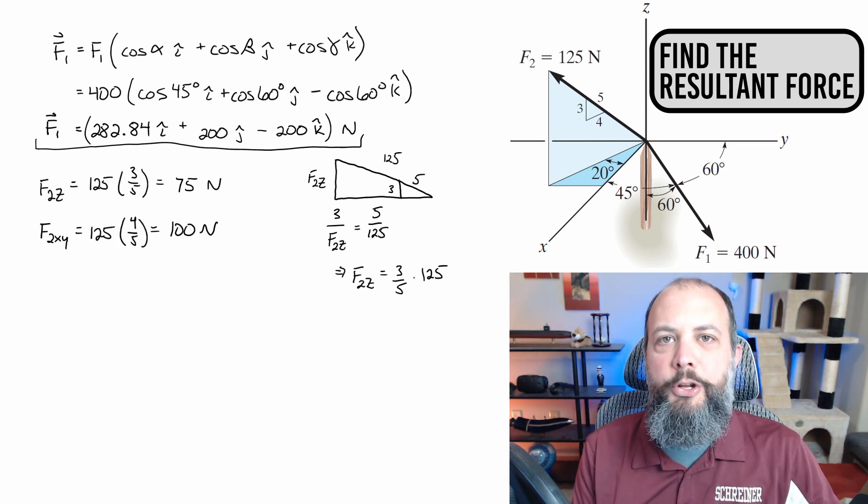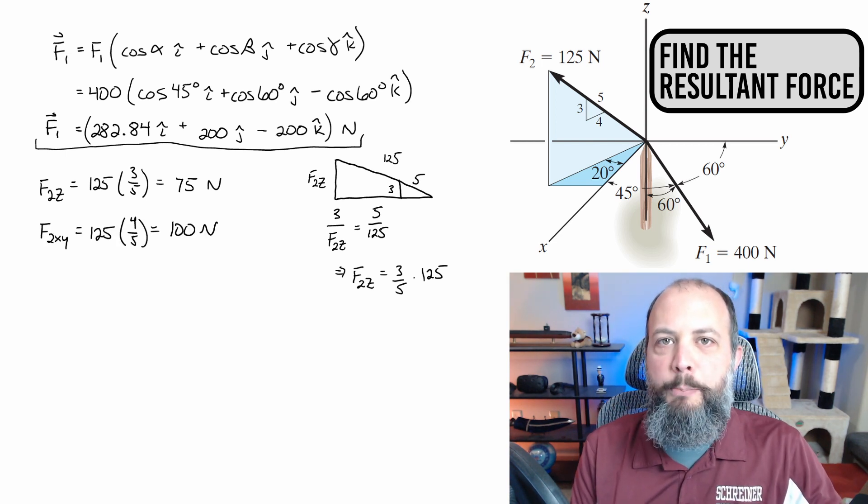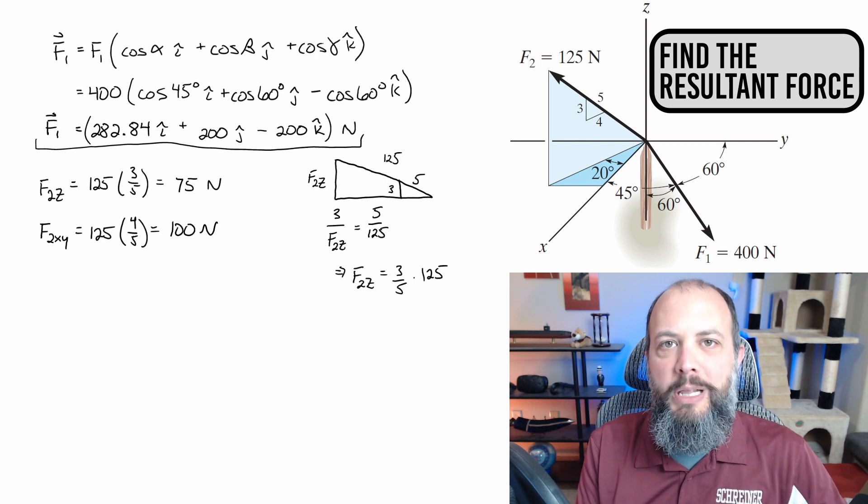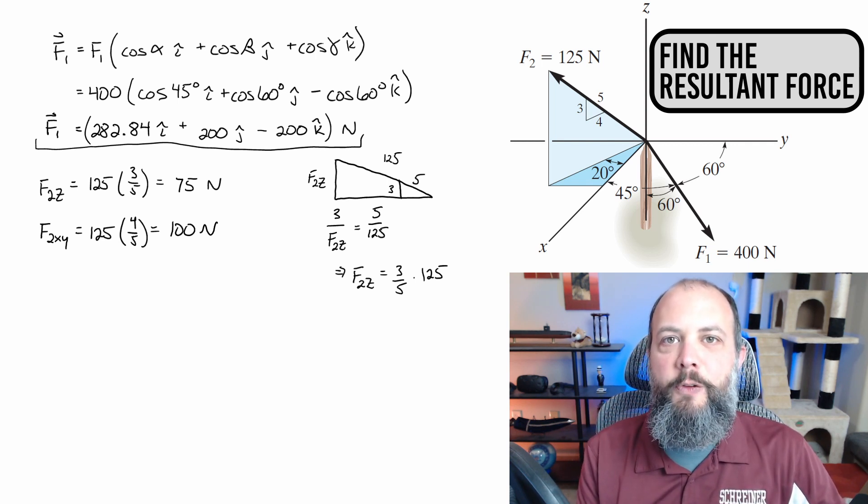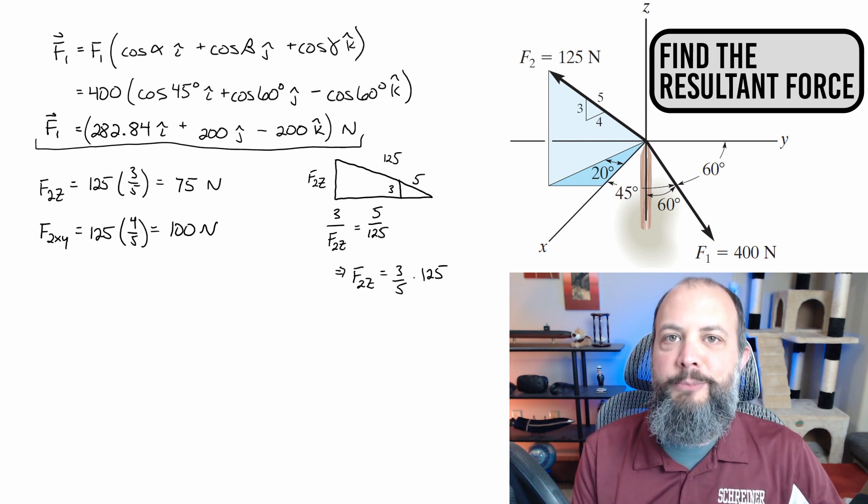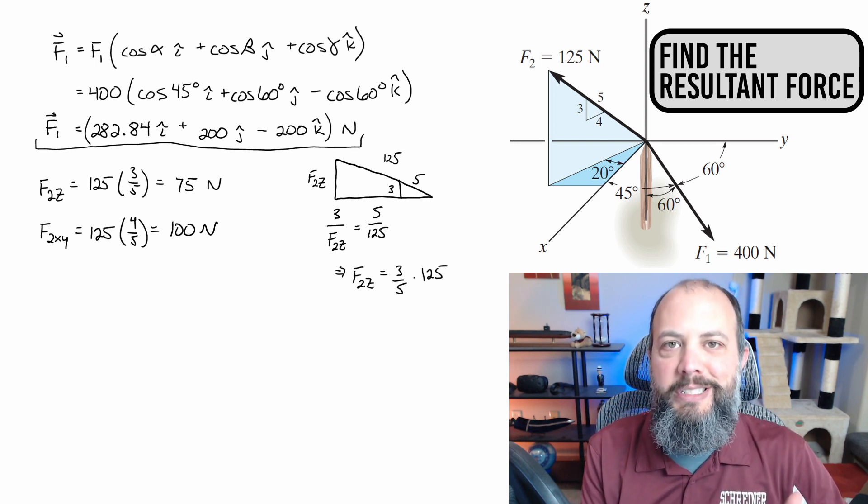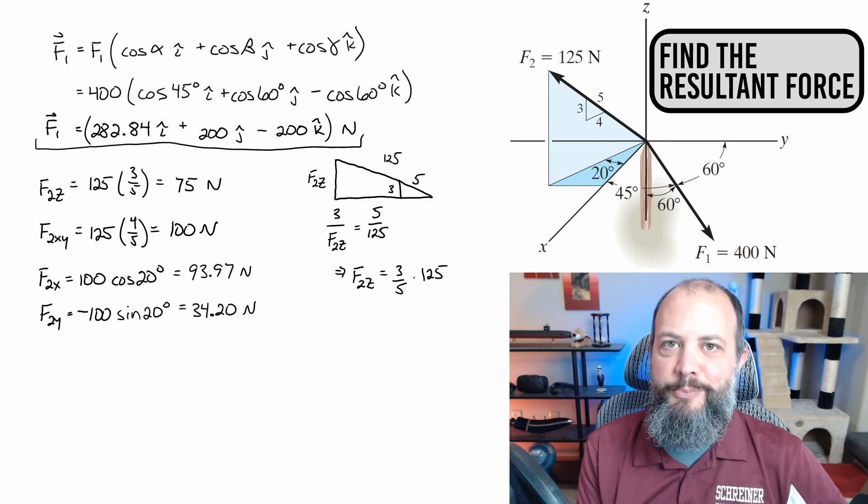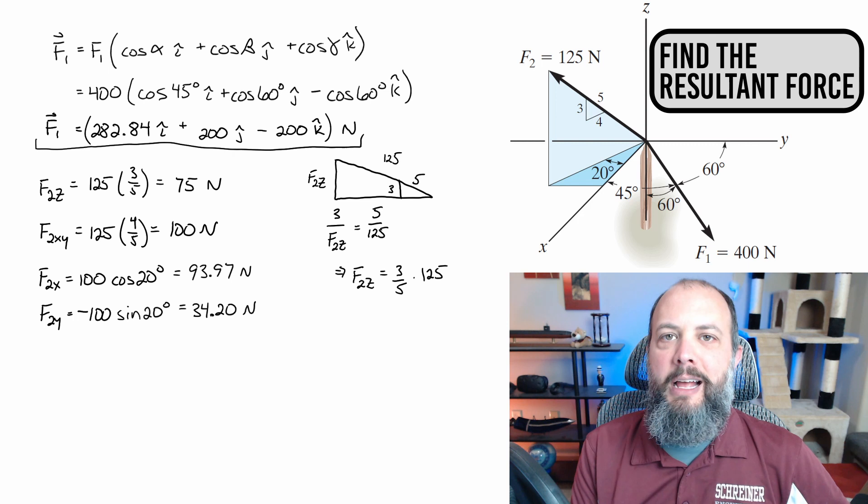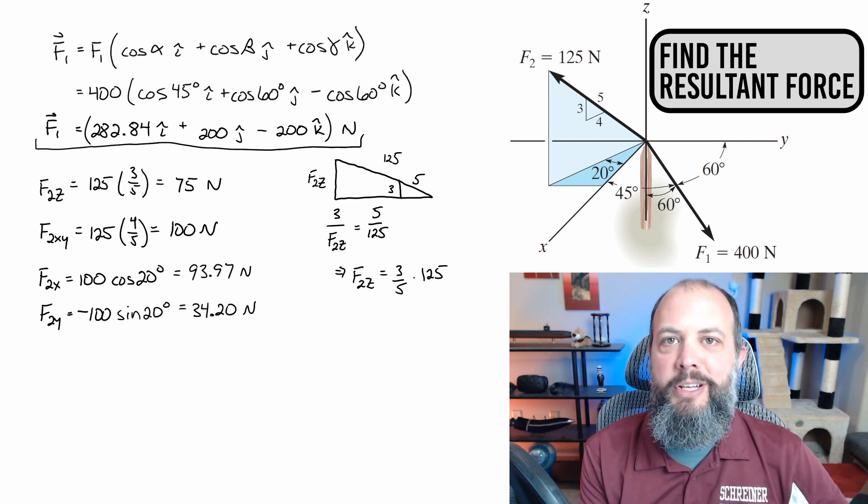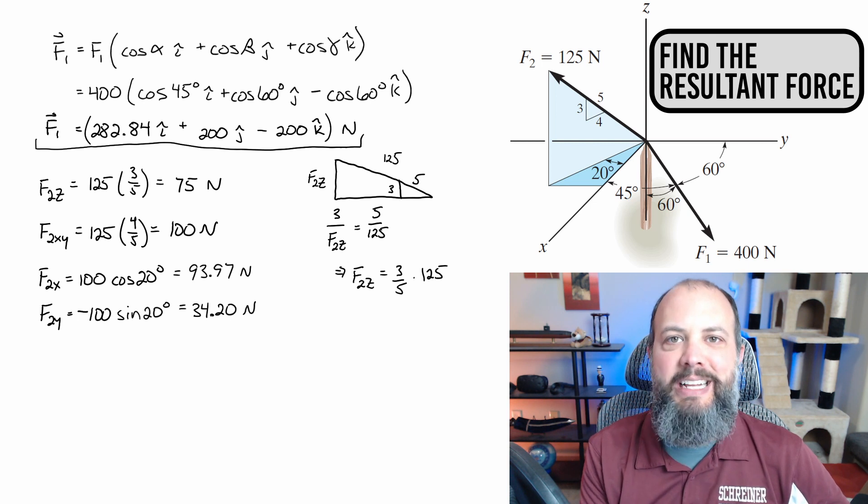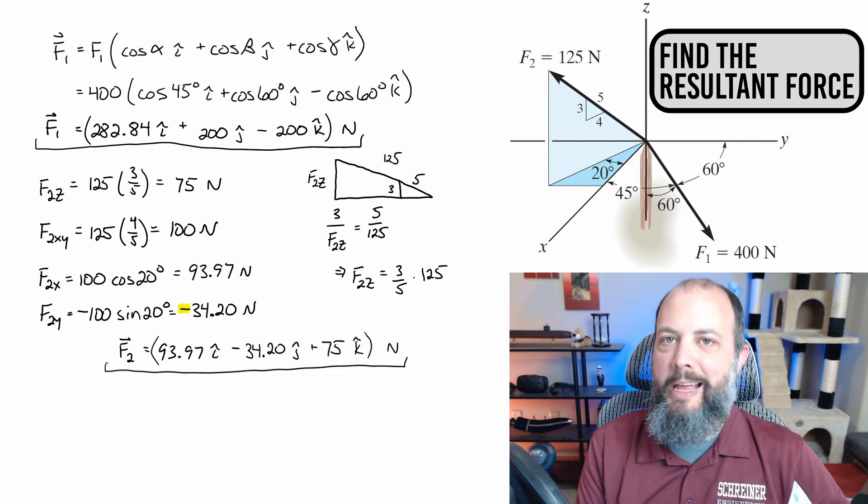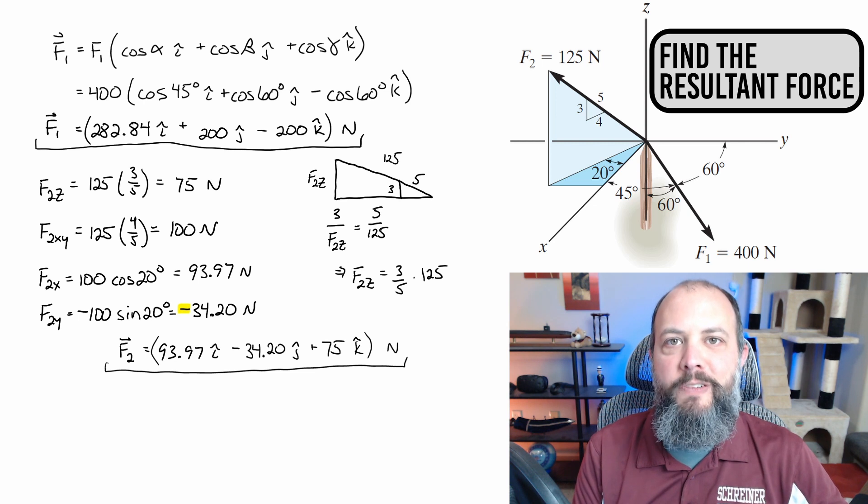So before I use the 20 degrees, I need to take that 125 and project it downwards onto the XY plane. This is again going to be done with similar triangles, this time using the horizontal four. So 125 times four fifths gives us this horizontal component. And since the 20 degrees is adjacent to the positive X axis, I'm using 100 cosine 20. And since the 20 degrees is opposite the negative Y axis, it's negative 100 sine 20 for the Y component. And combining the three terms gives us F2 in Cartesian form.